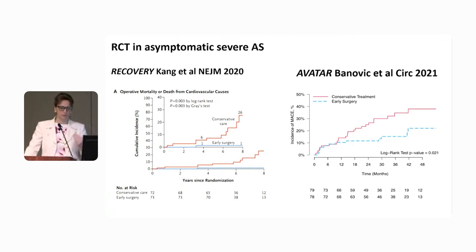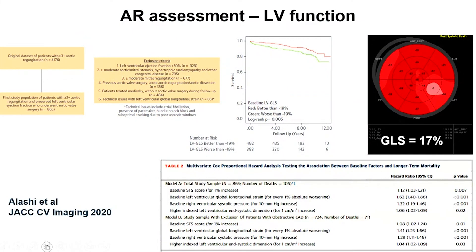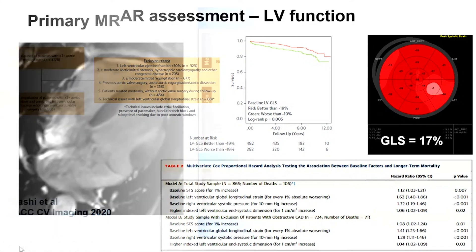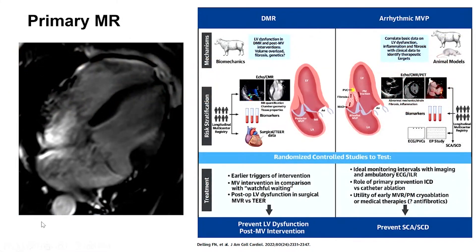Strain has been proposed as another technique, superior to ejection fraction, for identifying patients at higher risk of mortality in aortic regurgitation and primary mitral regurgitation. Focusing on the ventricle, particularly in degenerative mitral regurgitation, there is one disease associated with ventricular arrhythmias where patients are at risk of sudden cardiac death.